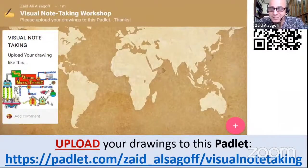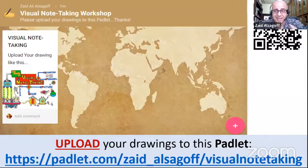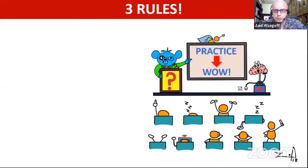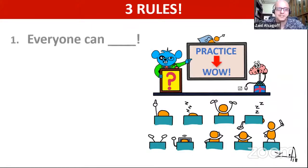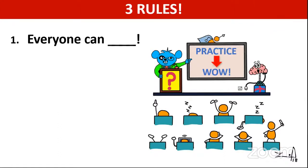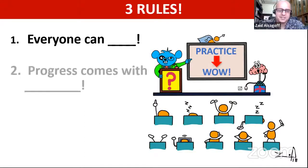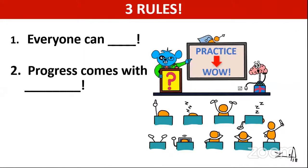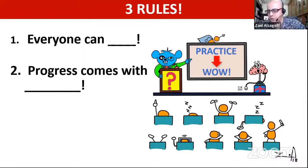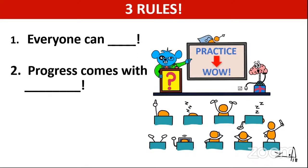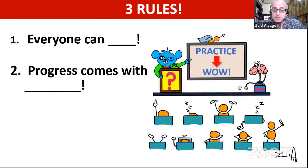So that's the Padlet wall. When we have drawing activities today, I want you to share your drawings on the Padlet wall so we can have fun in the process. We have three rules to remember. The first rule: everyone can draw. The second one: progress comes with practice. A lot of people say they cannot draw, but one of the reasons they feel that is they don't even practice. Drawing is a skill — if you don't practice, don't expect results. As you practice and are more strategic, the better you'll get.